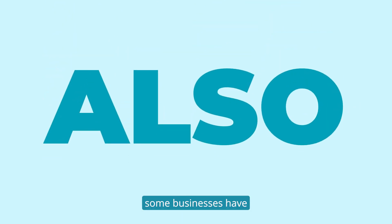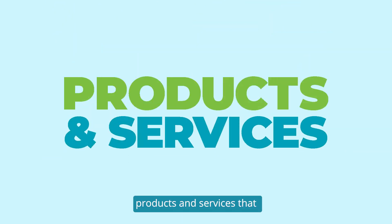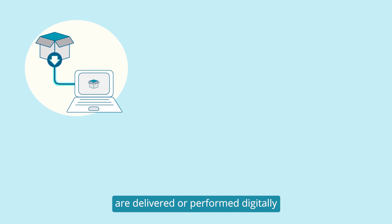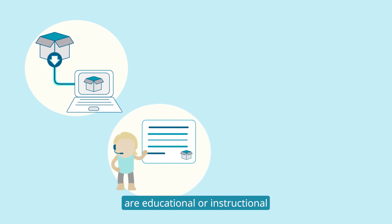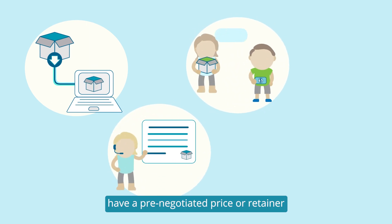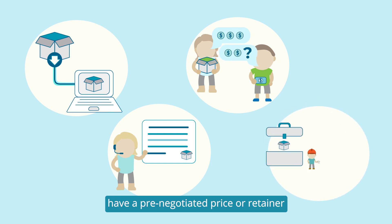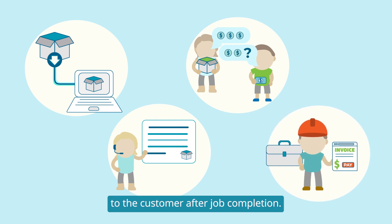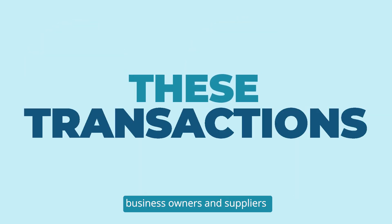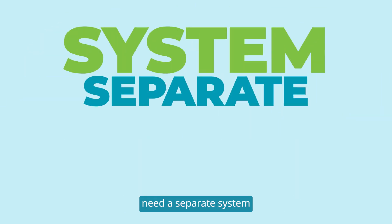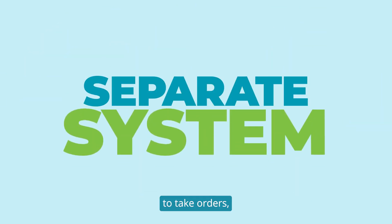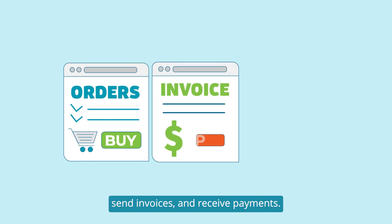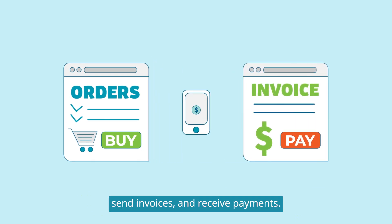Also, some businesses have products and services that are delivered or performed digitally, are educational or instructional, have a pre-negotiated price or retainer, or provide an invoice to the customer after job completion. For these transactions, business owners and suppliers need a separate system to take orders, send invoices, and receive payments.